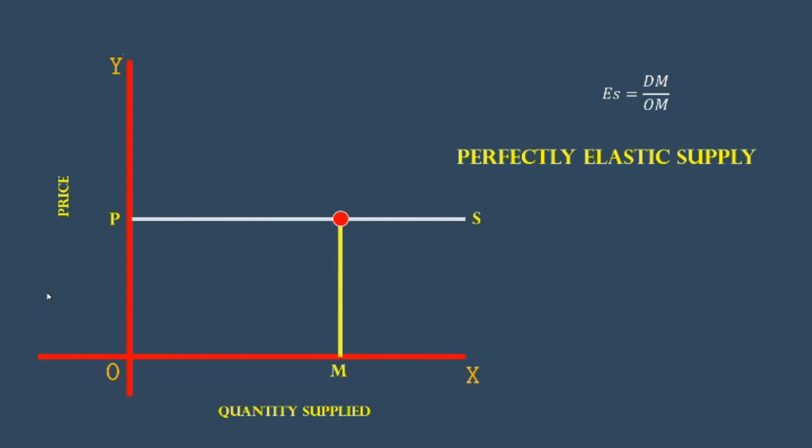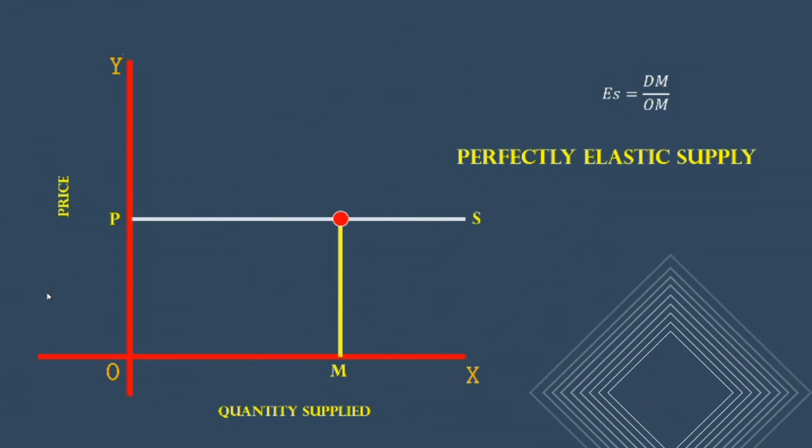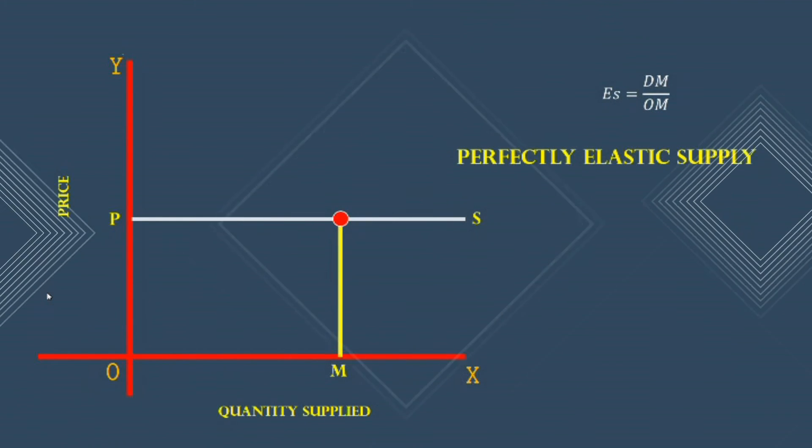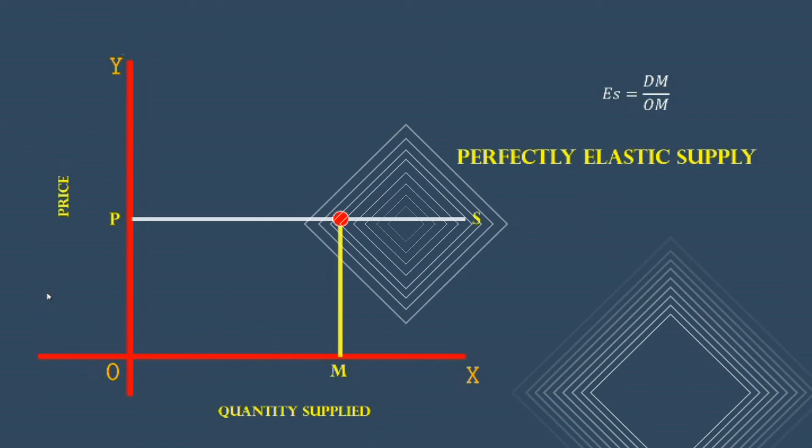Thus, by using the distance between DM and OM, we can measure the elasticity of supply.